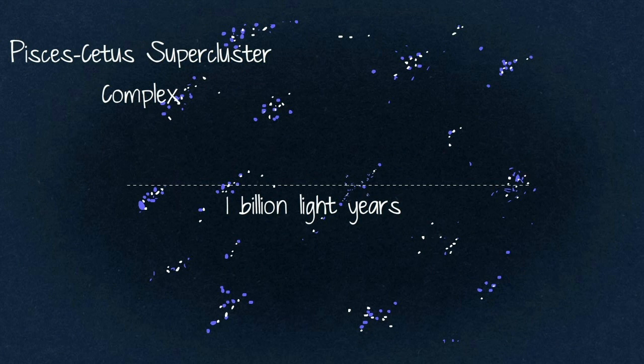The visible universe has a limit, because light takes time for getting to us. We can only see objects whose light has traveled a distance equivalent to the age of the universe, 13 billion years.